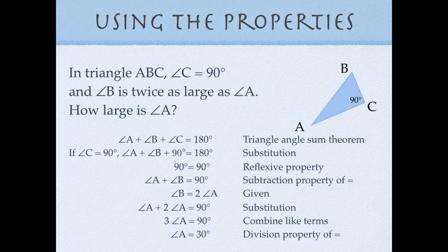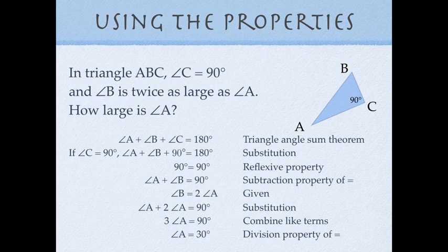Instead of angle B we write 2·(angle A), so the equation reads angle A plus 2·(angle A) equals 90 degrees. Combining like terms, 3·(angle A) equals 90 degrees. Finally, to get from 3·(angle A) equals 90 degrees to just angle A, we divide both sides by 3 — the division property of equality — and get angle A equals 30 degrees. That answers our question.